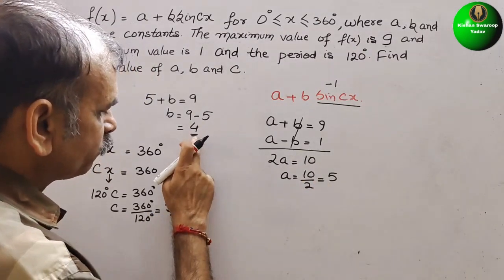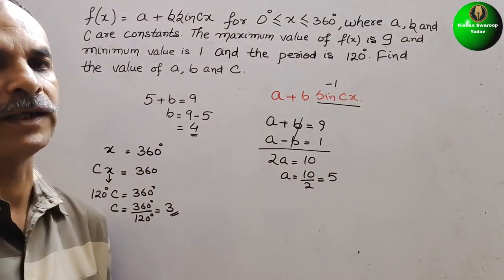Now we can say A is 5, B is 4, C is 3. So like this, we have to find it out.